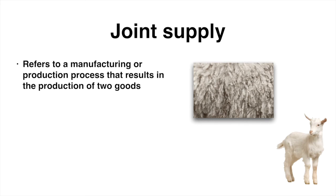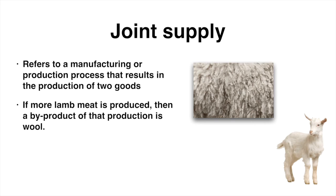Joint supply refers to a manufacturing or production process that results in the production of two goods. Take lamb meat and wool as an example. If more lamb meat is produced, we will have more of the wool of the sheep remaining. Therefore an increase in the supply of lamb meat would increase the supply of wool, and vice versa.